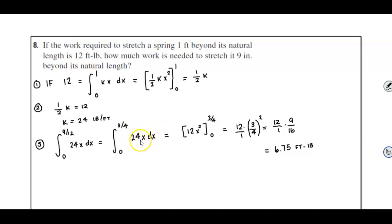The antiderivative of 24x is 12x squared, going from a lower limit of 0 to 3 fourths. The 0 is going to be eliminated, so therefore it's going to be 12 times 3 fourths squared, which becomes 12 times 9 over 16, which eventually becomes 6.75 foot-pounds.